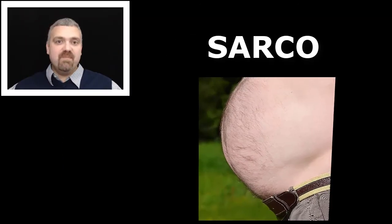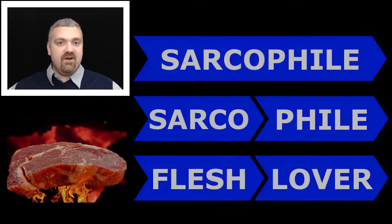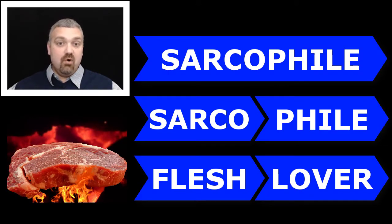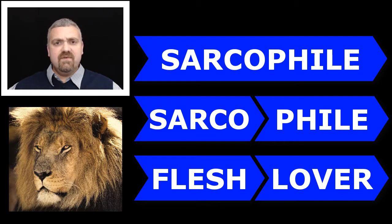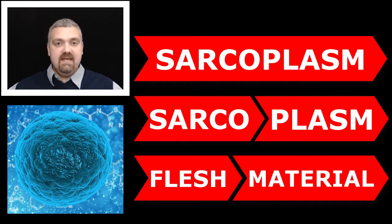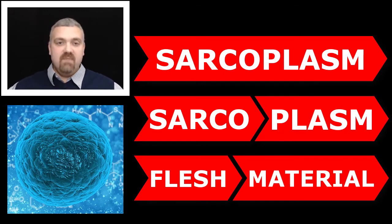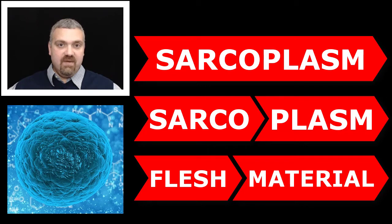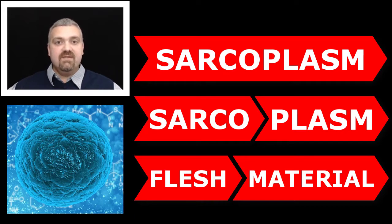Next we have sarco, which means flesh. Think sarcophile — phile means to love, so a sarcophile is anything that loves flesh, primarily used for top carnivores like lions. In humans, think sarcoplasm — plasm means the material or formation, so the sarcoplasm is what makes up your flesh. In most cells this is called the cytoplasm, but skeletal muscle cells get their own terminology: sarcoplasm. Similarly, the endoplasmic reticulum of a skeletal muscle cell is called the sarcoplasmic reticulum.